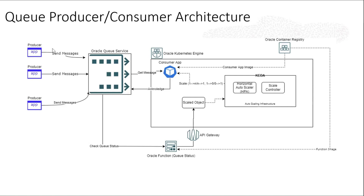The producer is sending messages. A message can be anything — you can send a JSON message, an XML message, a text message, or a binary message to Oracle queue service.